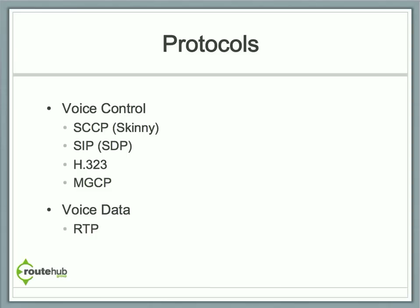For example, SKINNY or SCCP is a Cisco-based voice control protocol that IP phones use to connect to the Call Manager server for placing and receiving phone calls. SIP and H.323 are the industry standard voice control protocols, where SIP is more widely used in today's industry. MGCP is a voice control protocol mainly used between a voice gateway and a call manager to provide dynamic call routing throughout a PSTN.